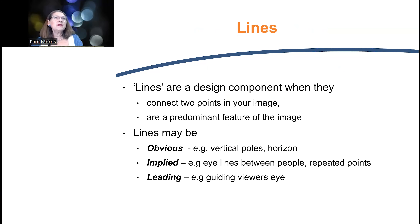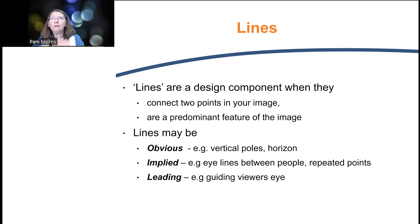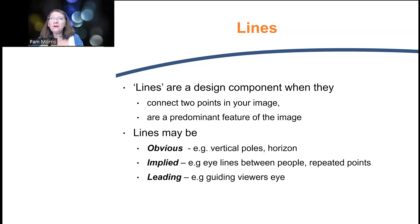Typically, lines connect two points and they may not necessarily be physical — a physical line could be a vertical pole, a horizon, or a bridge. They can also be implied: if you've got three people each looking at something, there are eye lines there. Then there are leading lines that guide the viewer's eye somewhere. They are typically a predominant feature in the image, even if implied. In an image we can have a beautiful subject, but we need extra information to actually communicate something emotive — and if we incorporate lines, we get extra bang for our buck.